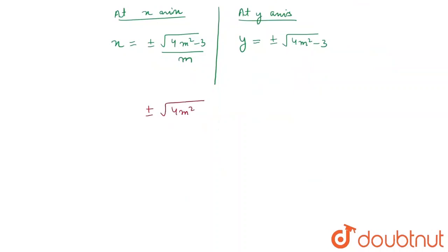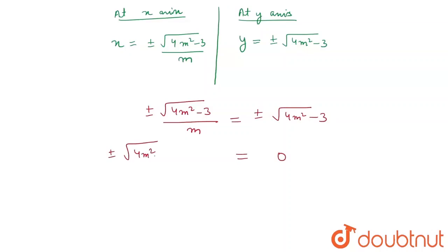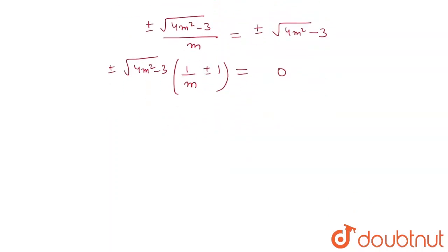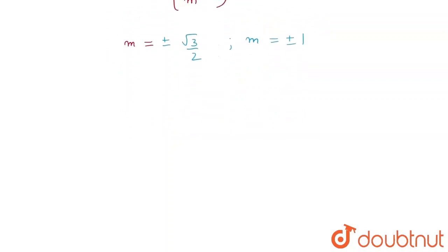Since they make equal intercepts, we set ±√(4m² − 3) / m = ±√(4m² − 3). Solving this equation gives us ±1/m = ±1, which means m = ±1 or m = ±√3/2 as possible values.